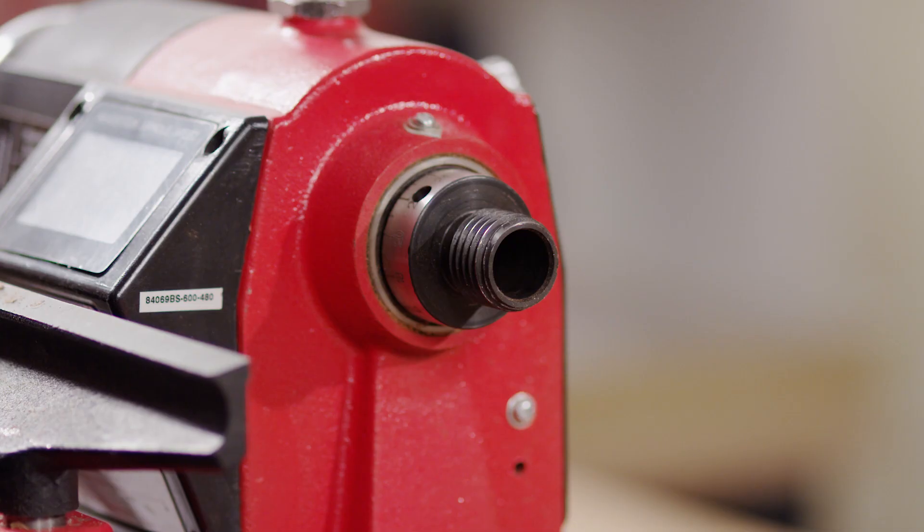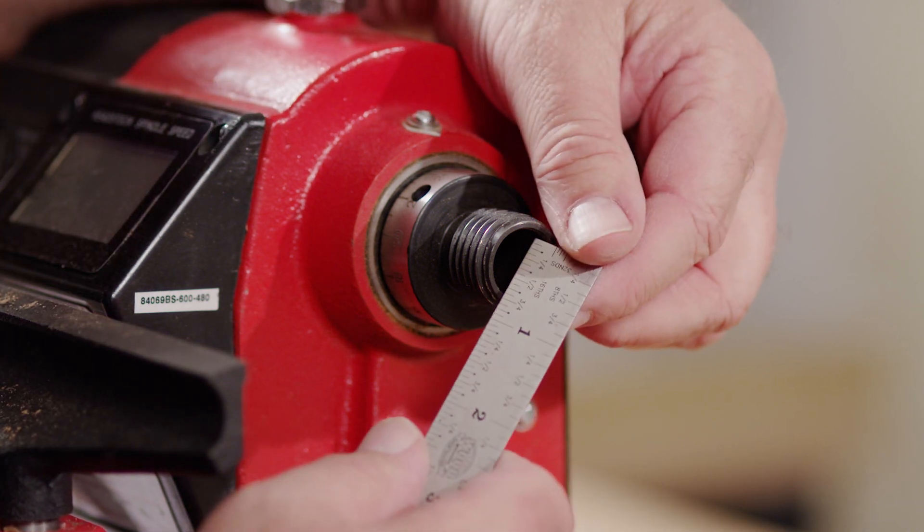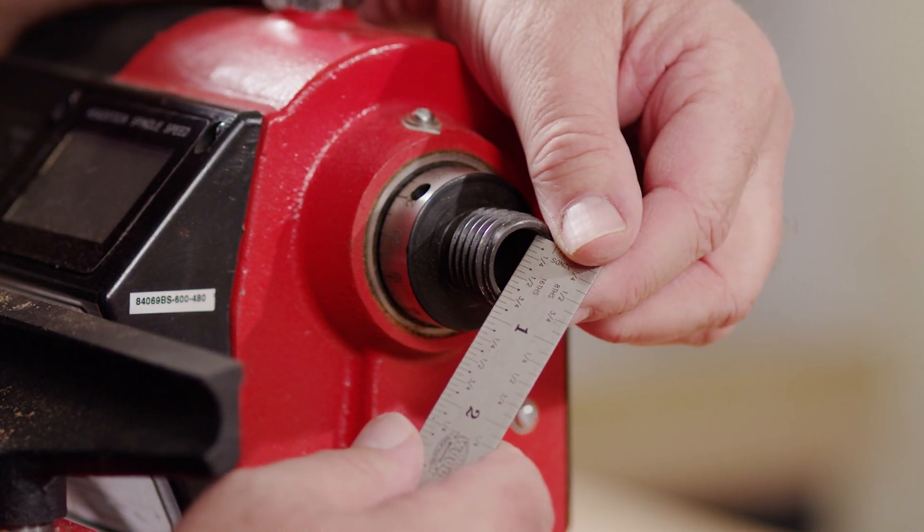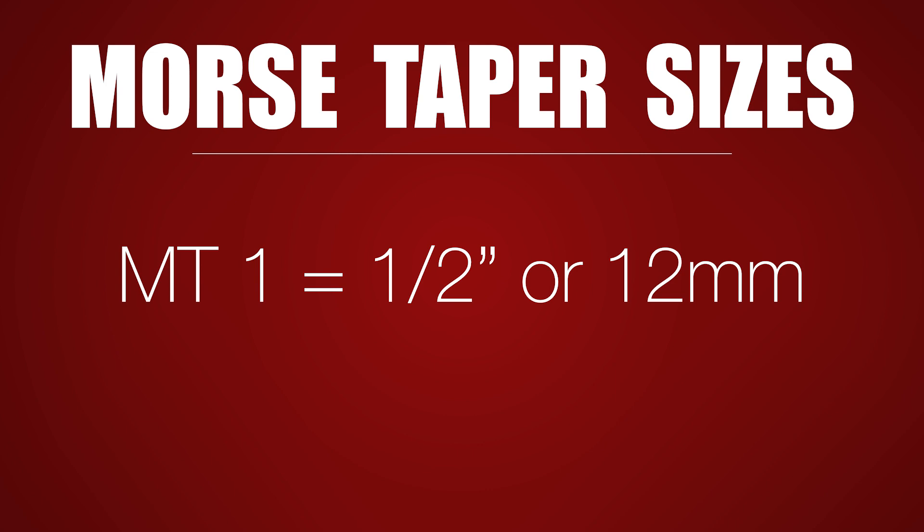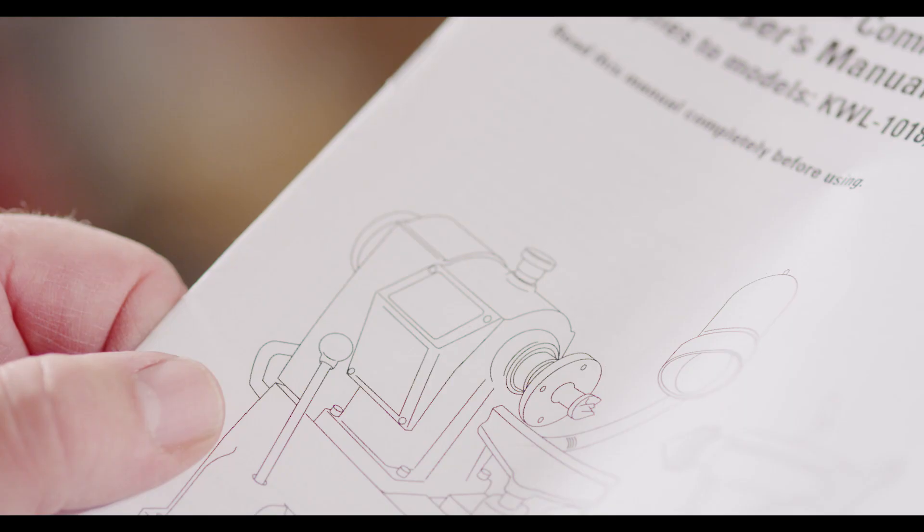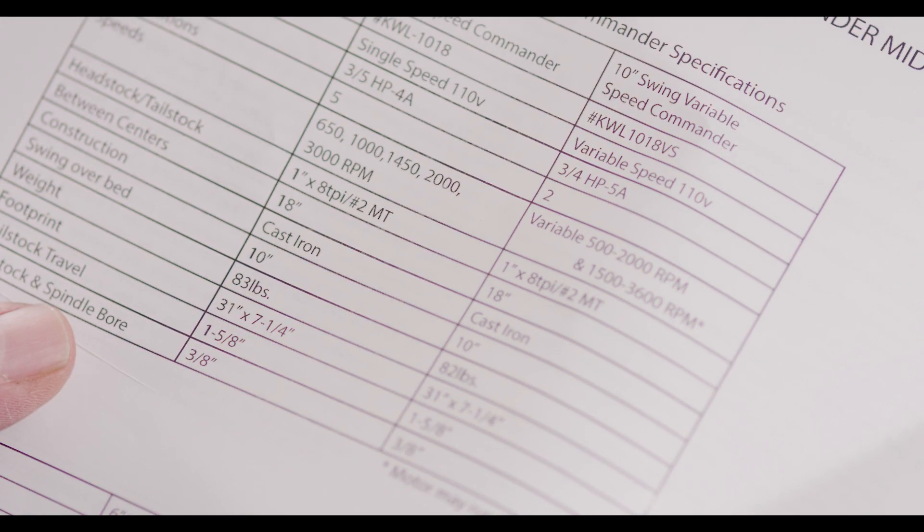The best way to determine the Morse taper or MT size of your mandrel is to measure the hole opening the Morse taper fitting goes into. If the hole is about half an inch or 12 millimeters, it is an MT1 size. If the hole is about 3 quarter inches or 18 millimeters, it is an MT2 size. If you're still unsure of your Morse taper size, you can refer to your lathe's owner's manual.